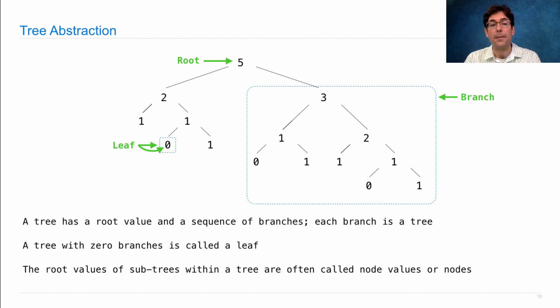The root values of subtrees within a tree are often called node values or nodes. So you might see that vocabulary used as well. This whole thing is a tree. Its branch is a tree, and the branch of the branch is also a tree. So here's one of the many subtrees within this tree. And the number 2 here, which is the root value of a subtree, somewhere within this whole tree, is called a node.